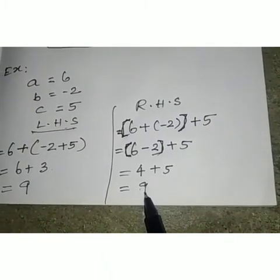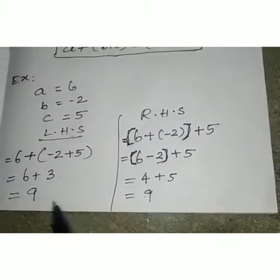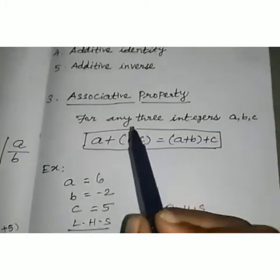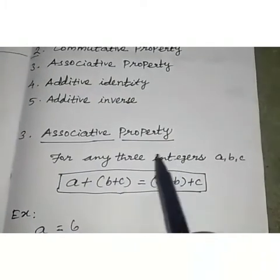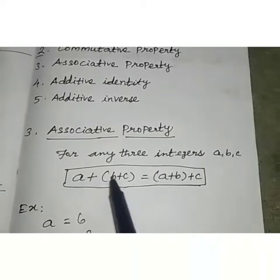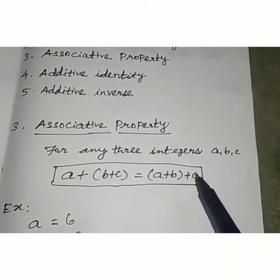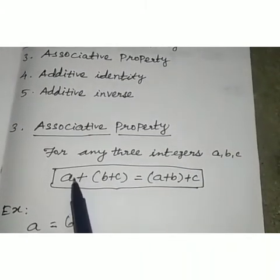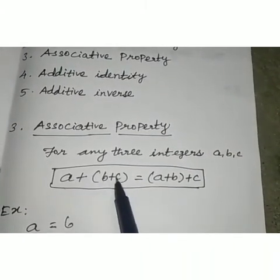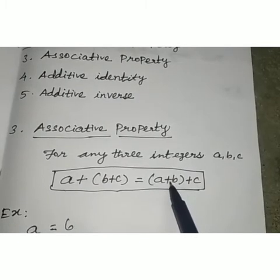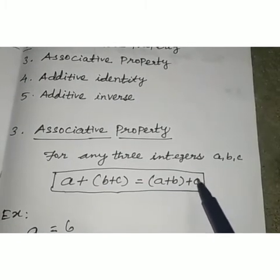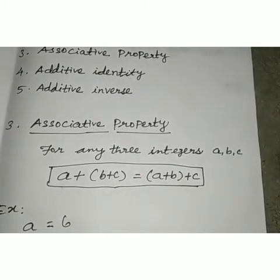The left hand side value is 9 and the right hand side value is 9. So this satisfies the associative property: a plus (b plus c) equals (a plus b) plus c.